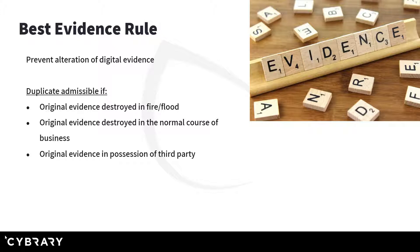The best evidence rule: the goal is to prevent alteration of digital evidence, so the best evidence is unaltered and we want to use that original evidence in the actual court of law. A duplicate of the evidence is admissible if it meets one of these criteria: the original evidence is destroyed — like in a fire, flood, or other act of nature; the original evidence is destroyed in the normal course of business, since as investigators we may actually destroy some volatile evidence during analysis; or the original evidence is in possession of a third party — for example, a suspect has information on their laptop that we can't access, but they uploaded it to a website where we can obtain it via warrant.